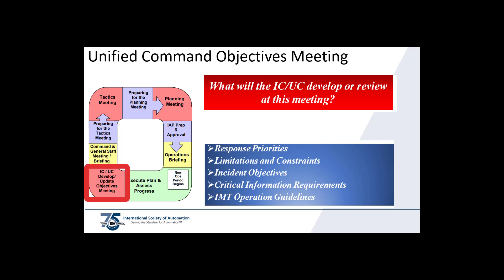The wall visuals are, at a minimum and in order: Number 1, the ground rules; Number 2, an agenda; Number 3, an incident chart and/or the ICS-201; Number 4, the ICS-202 incident objectives; Number 5, the ICS-202B critical information requirements and incident response team requirements. If necessary, the ICs may ask for other visuals to be included.